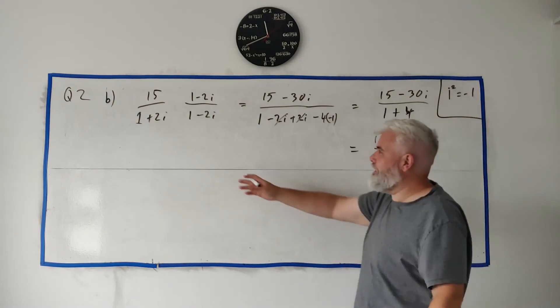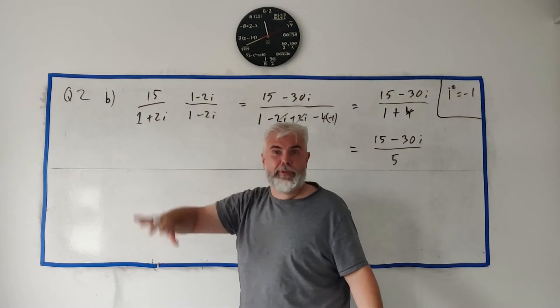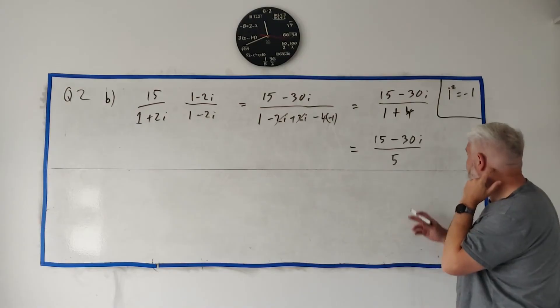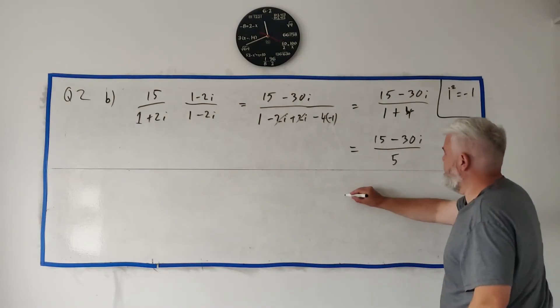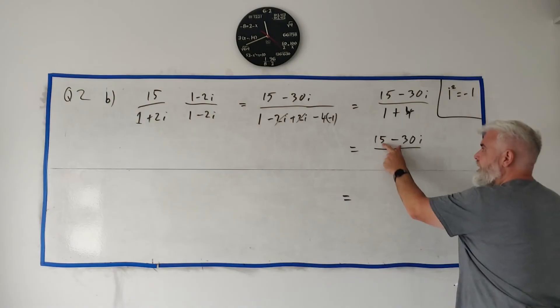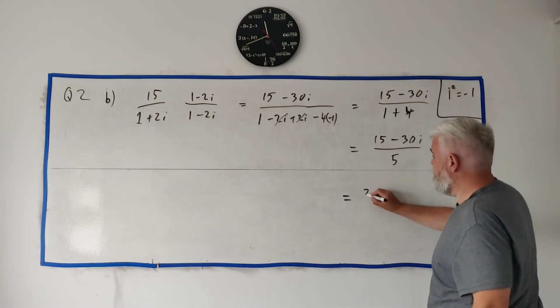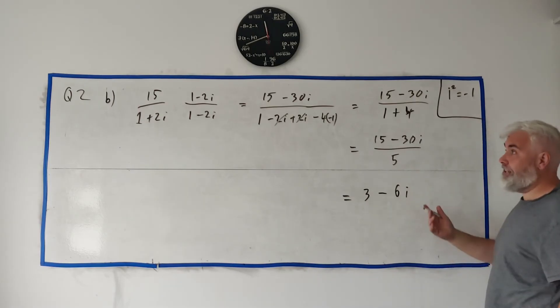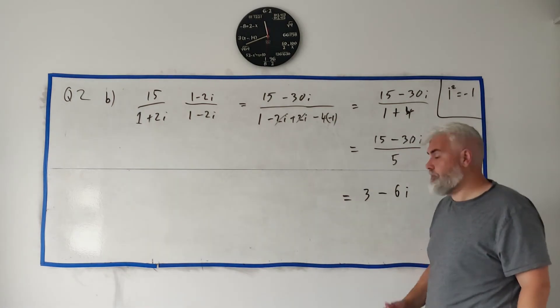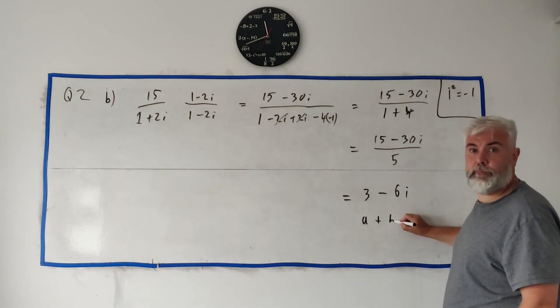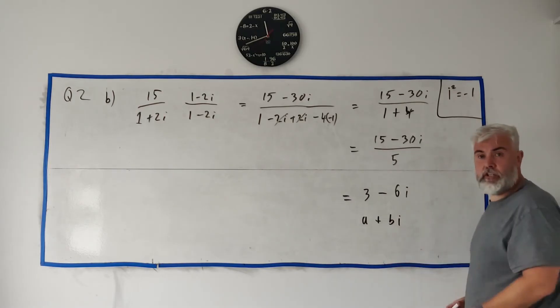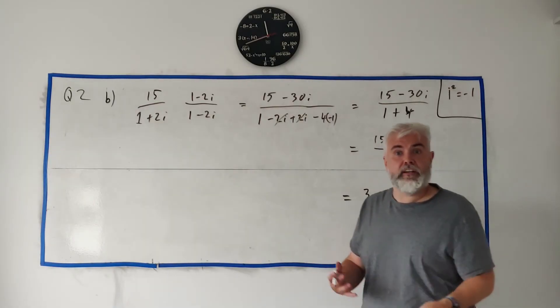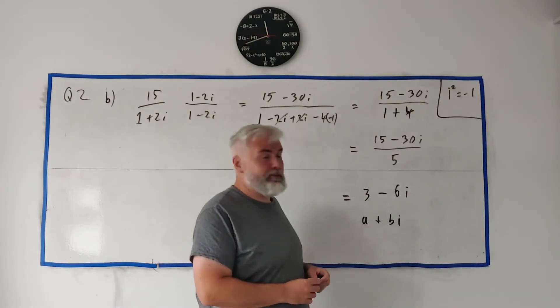So what does that become? That becomes 15 minus 30i over 5. Look, the bottom row, instead of being messy, two numbers and one of them an i, it's just become a single number. And they're easy to deal with. Dividing by a number just means dividing into everything here. This just means 5 divides into both of these guys. 5 into 15 is 3. 5 into minus 30 is minus 6i. And that's the answer. And they asked us for the answer to look like this. a plus bi, where a and b are just normal numbers. a is 3 and b is minus 6. They're normal integers. So that's the answer to part b.